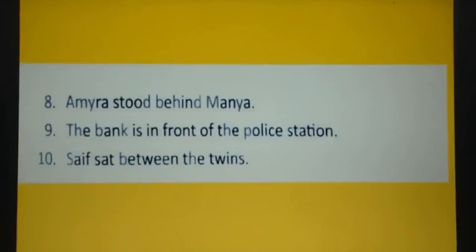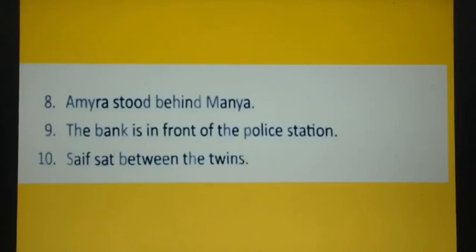Amira stood behind Mania — Amira, Mania के पीछे खड़ी थी. जब कोई किसी के पीछे होता है तो कौन सा preposition use करते हैं? उसको circle करेंगे. The bank is in front of the police station — bank police station के सामने है. जब कोई चीज किसी के सामने होती है तो कौन सा preposition use होता है? उसको circle करेंगे. Safe sat between the twins — safe twins दोनों के बीच में बैठा हुआ है, तो preposition को circle करेंगे.